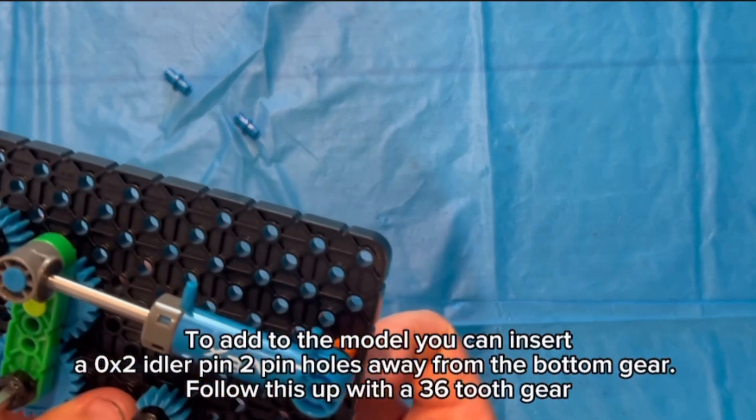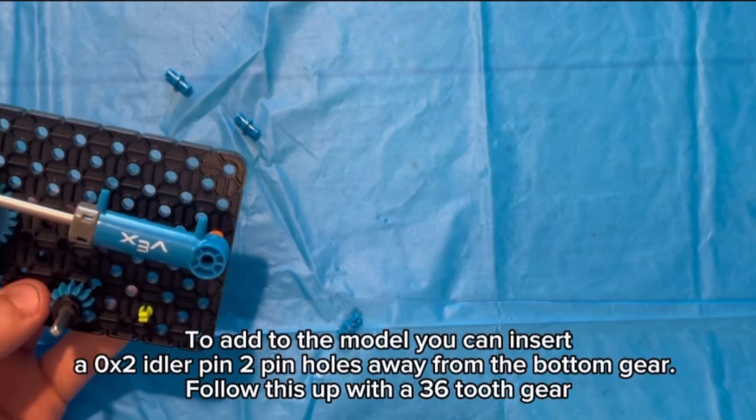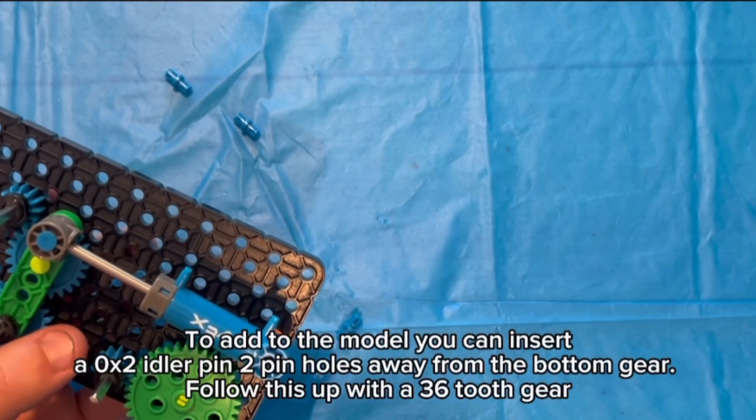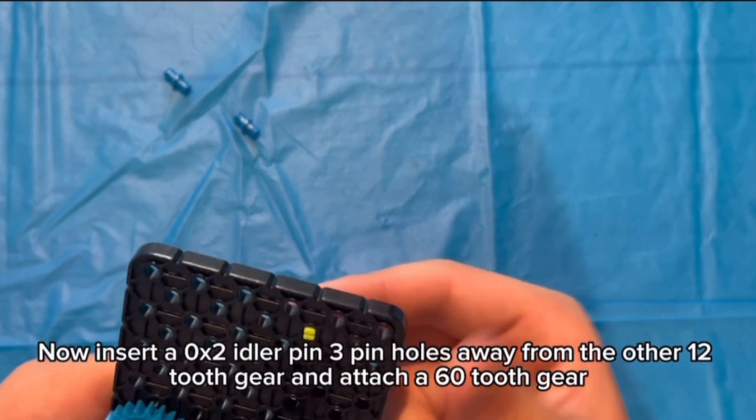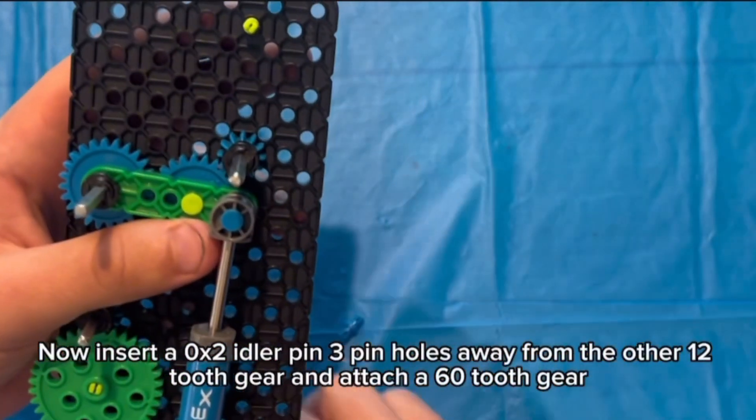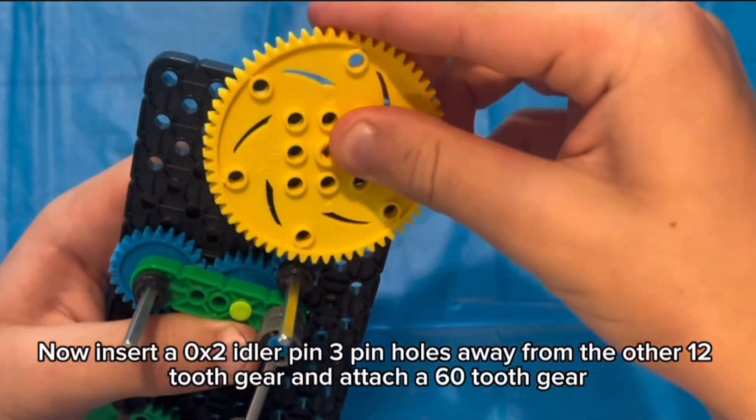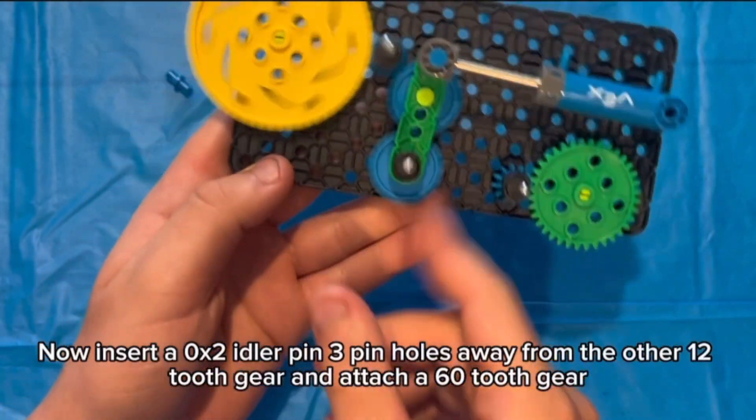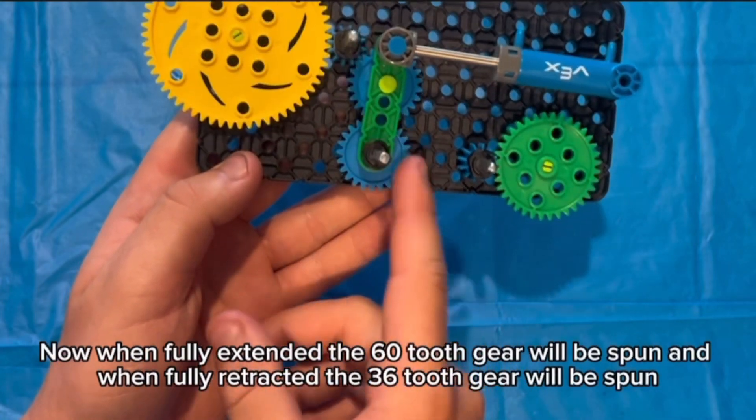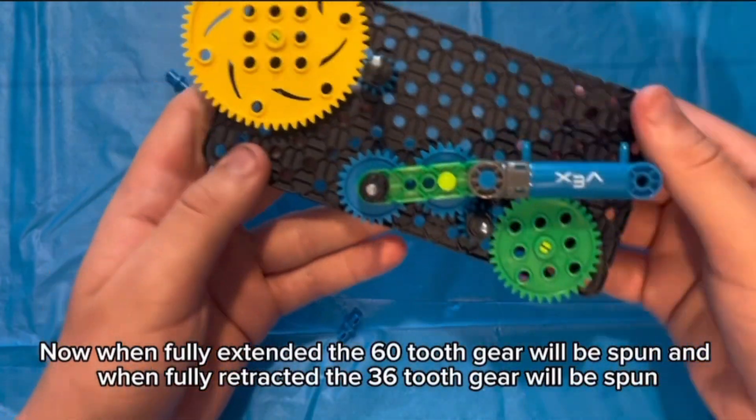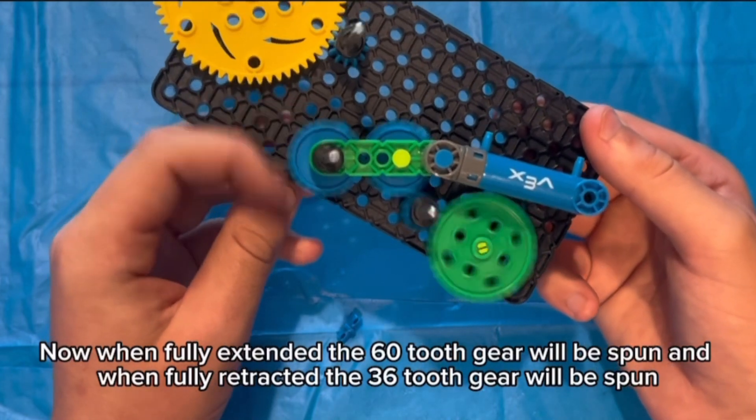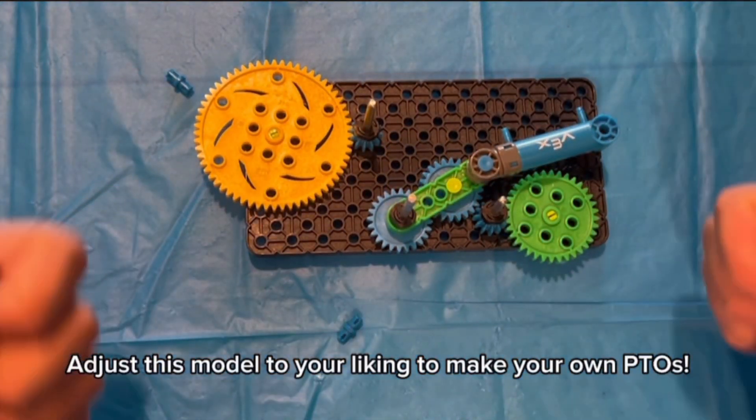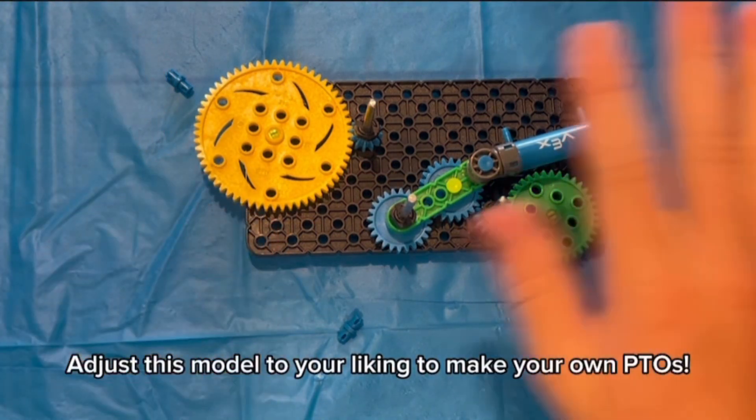To add to the model you can insert a 0x2 idler pin two holes away from the bottom gear. Follow this up with a 36 tooth gear. Now insert a 0x2 idler pin three holes away from the other 12 tooth gear and attach a 60 tooth gear. Now when fully extended the 60 tooth gear will be spun and when fully retracted the 36 tooth gear will be spun. Adjust this model to your liking to make your own PTOs.